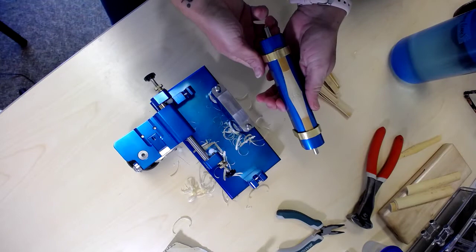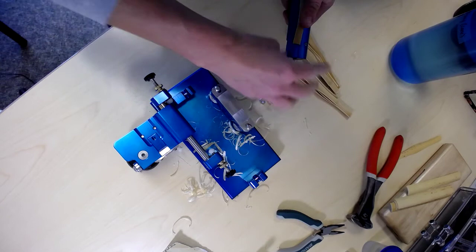Now I can take my clamps off, take the cane off the barrel. And I have a piece of cane that is gouged and shaped and profiled and ready to be folded and made into a blank.